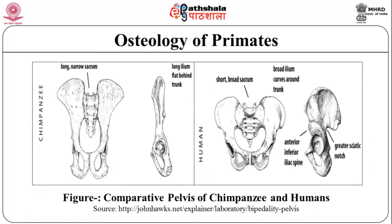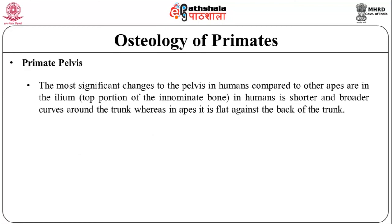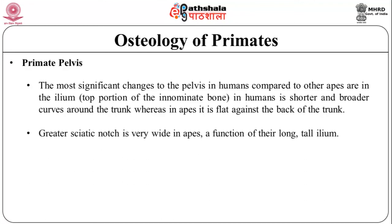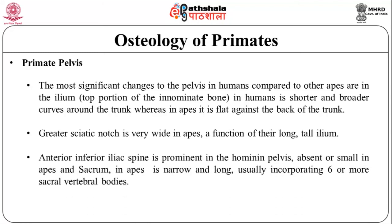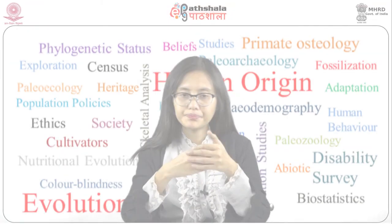This figure illustrates the comparative pelves of the chimpanzee and humans. The most significant changes to the pelvis in humans compared to other apes are in the ilium — the top portion of the innominate bone. In humans it is shorter and broader and curves around the trunk, whereas in apes it is flat against the back of the trunk. The greater sciatic notch is very wide in apes — a function of the long tall ilium. The anterior inferior iliac spine is prominent in the hominin pelvis, absent or small in apes, and the sacrum in apes is narrow and long, usually incorporating six or more sacral vertebral bodies.